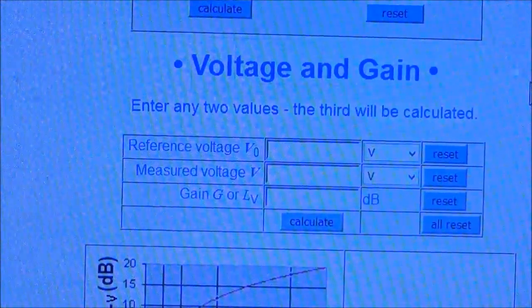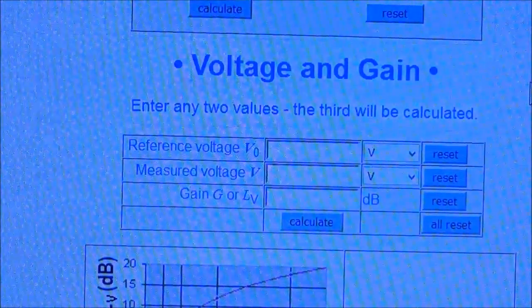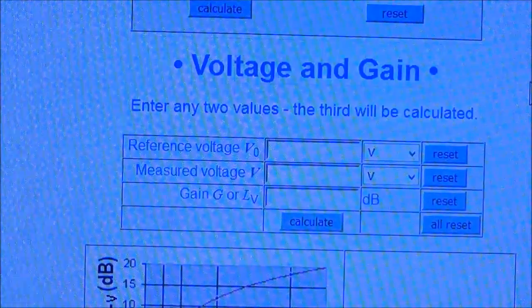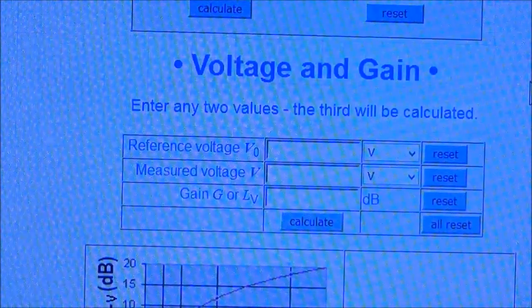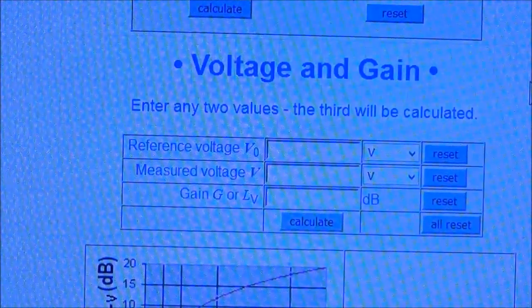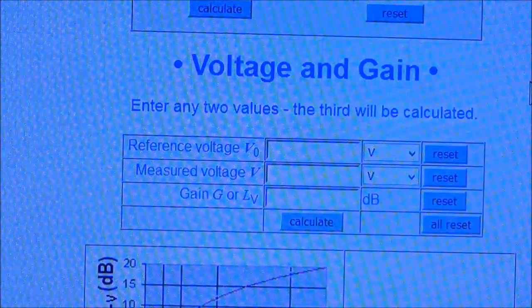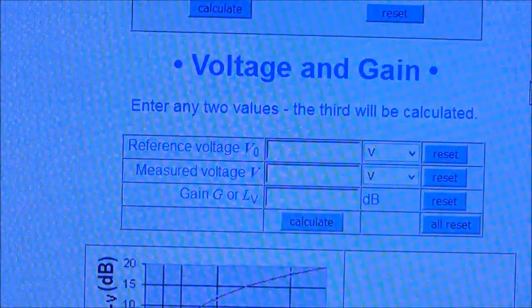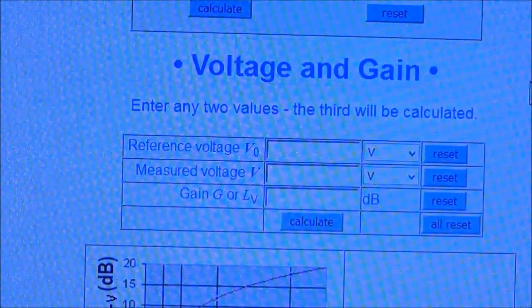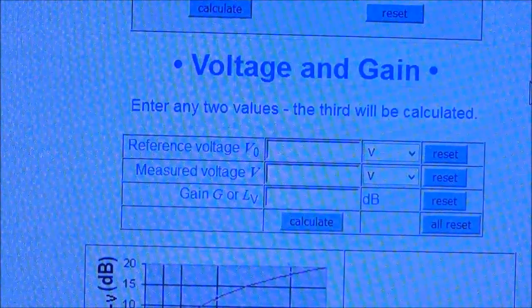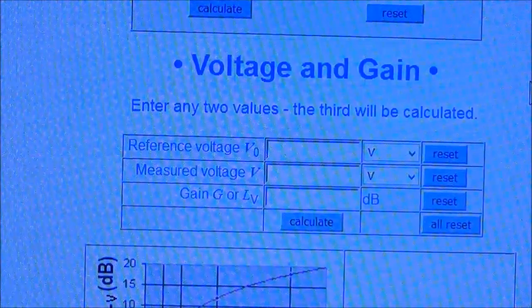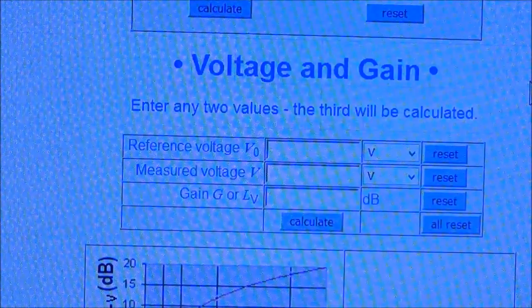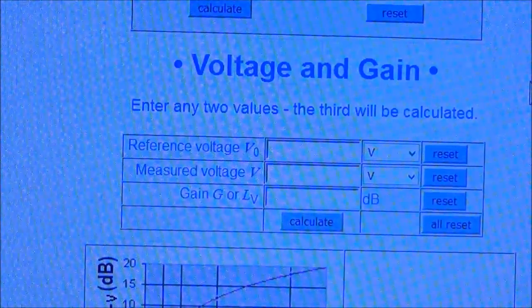So once we have all of our measurements, which were from 30 to 15,000 hertz, we have to see how our curve compares to the RIAA curve. And the easiest way to do this, at least for me, is just to go online. There's a website, it's called Sengpiel Audio. I'm gonna go ahead and put the link in my write up to this.